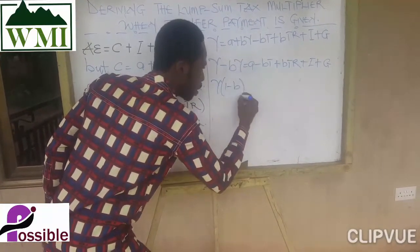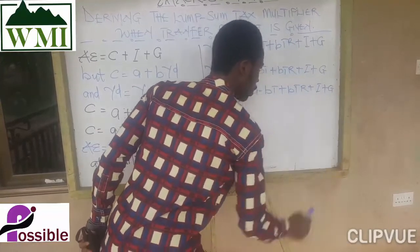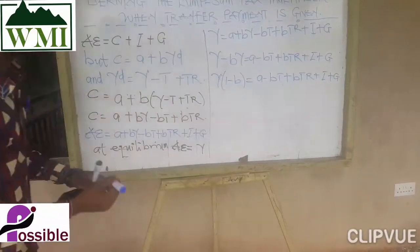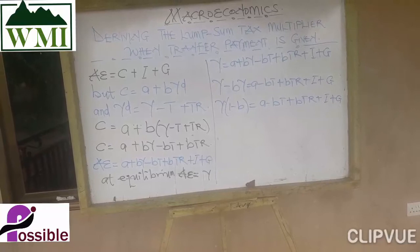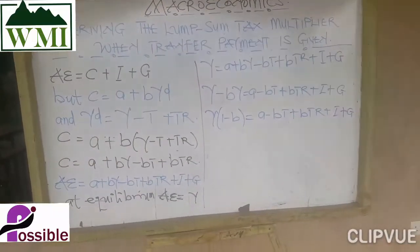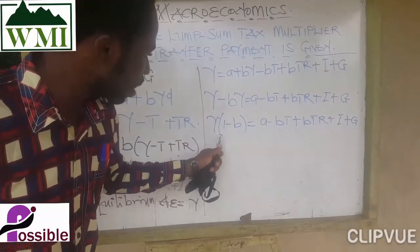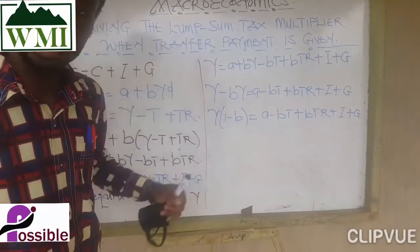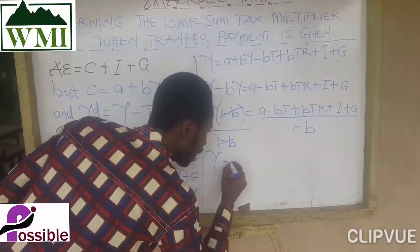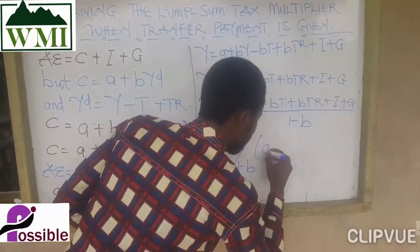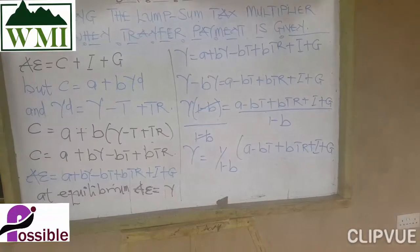Grouping like terms, bringing all Y to one side: Y minus BY equals A minus BT plus BTR plus I plus G. Factoring out Y: Y times (1 minus B) equals A minus BT plus BTR plus I plus G. Dividing both sides by (1 minus B), we get Y equals 1 over (1 minus B) times the bracket: A minus BT plus BTR plus I plus G.